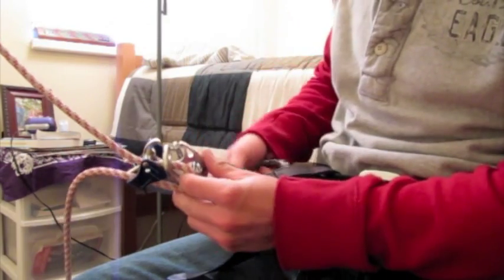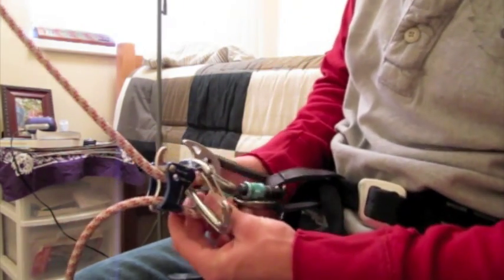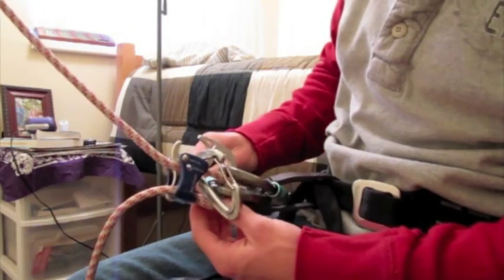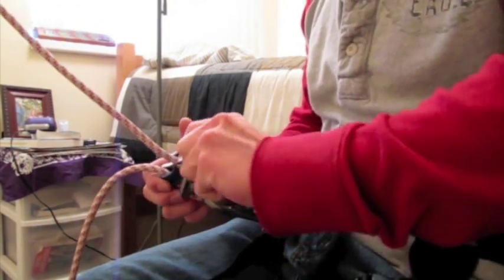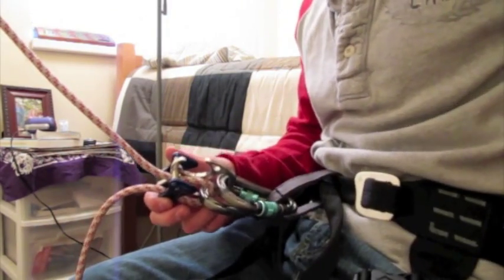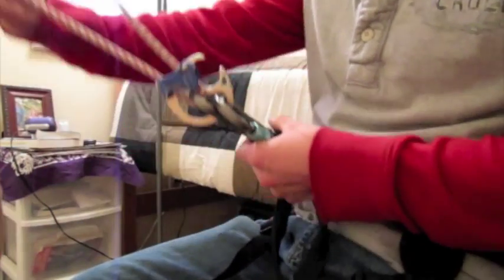Take the beaner, clip it to your harness, and clip it through both, that and that. Remove this, pop it in. Now you're ready to rappel.